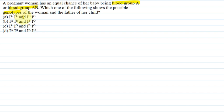Option A is IA, IA and IBIO. Option B is IA, IB and IBIO. Option C is IA, IO and IBIO. Option D is IA, IB and IA, IO.